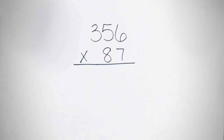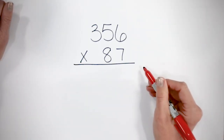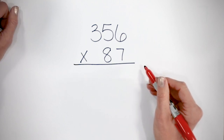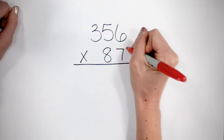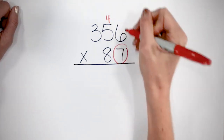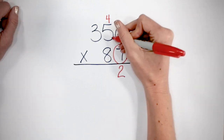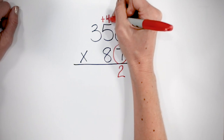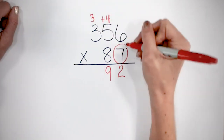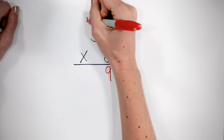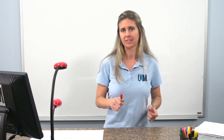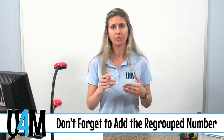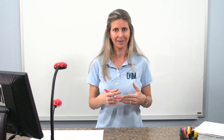Here we have 356 times 87. This one's already set up for us vertically, which is nice. So we're going to start with our ones place and multiply seven by every number on top. 7 times 6 is 42. 7 times 5 is 35, plus the 4 we carried is 39. 7 times 3 is 21, plus the 3 we carried is 24. I also like to tell students to put a plus sign when we're carrying those numbers so we don't forget to add those values on top of the number we're multiplying.